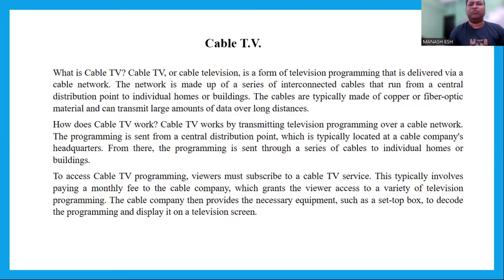Cable TV works by transmitting signals from a central location to a series of nodes, which then distribute the signal to individual homes or businesses. Cable TV providers typically offer a variety of programming options including news, sports, movies, and specialty channels. Some providers also offer premium channels such as HBO and Showtime, which require a separate subscription fee.